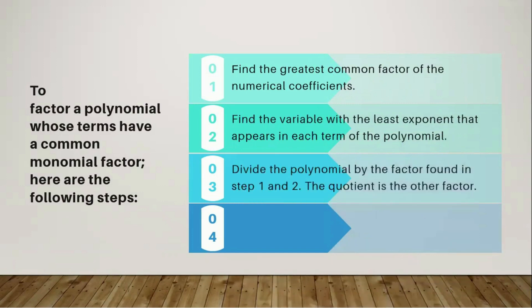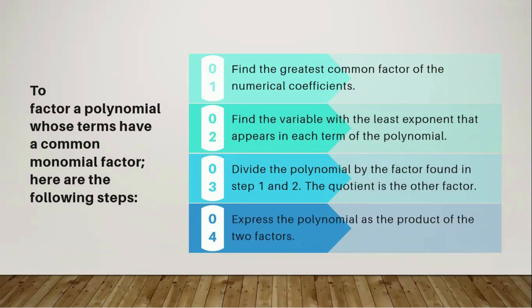Step three: divide the polynomial by the factor found in steps one and two — the quotient is the other factor. Step four: express the polynomial as the product of the two factors.